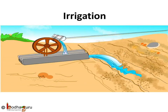Next, the farmer has to provide water to the crops. This supply of water to crops at different intervals is called irrigation. The time and frequency of irrigation varies from crop to crop, soil to soil, and from season to season. In summer, the frequency of watering is higher due to increased evaporation from soil and leaves. Sources of water for irrigation include wells, ponds, rivers, lakes and tube wells.